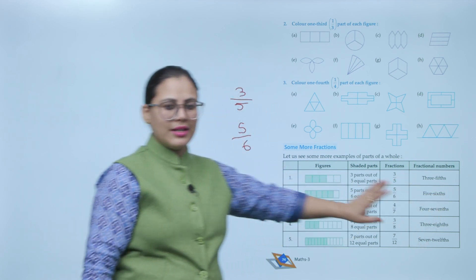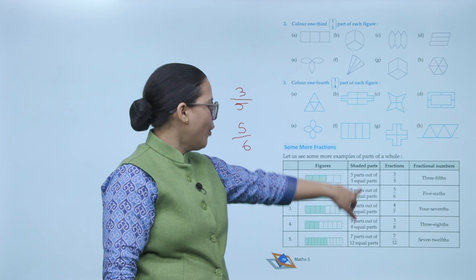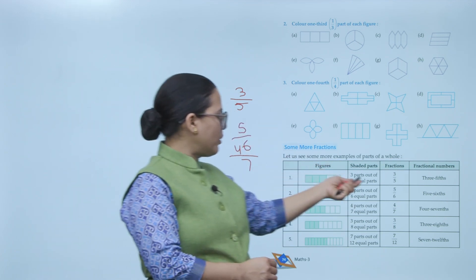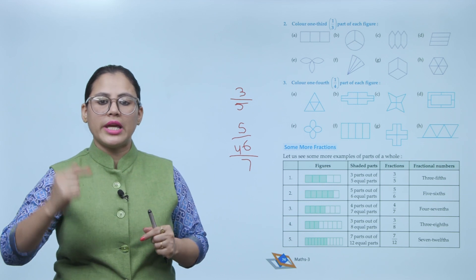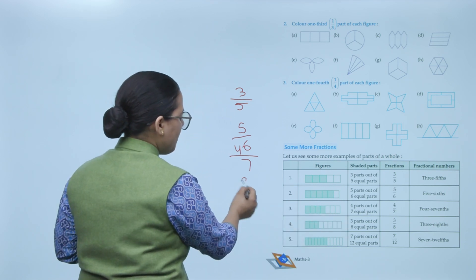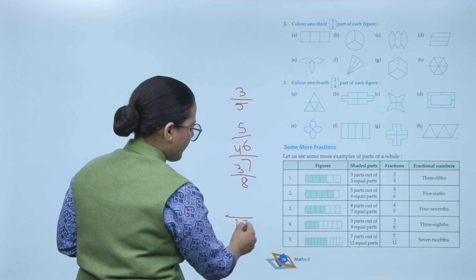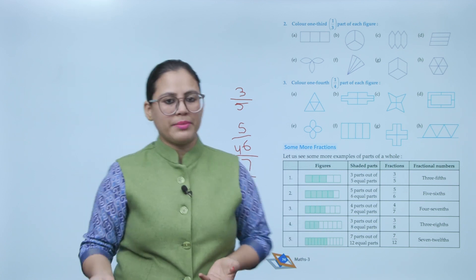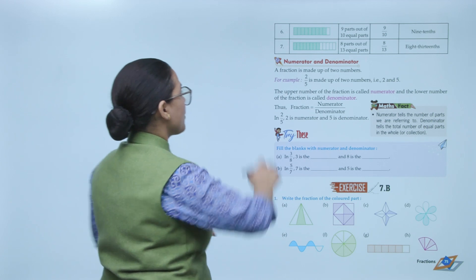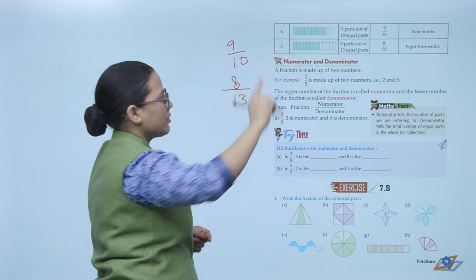Next, 4 parts out of 7 equal parts — written as 4 sevenths. Then 7 out of 12 — read as 7 twelfths. Next, 3 out of 8 equal parts — 3 eighths. Then 9 parts out of 10 equal parts — 9 tenths. And 8 parts out of 13 equal parts — 8 thirteenths.